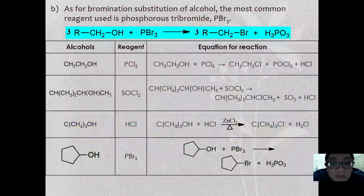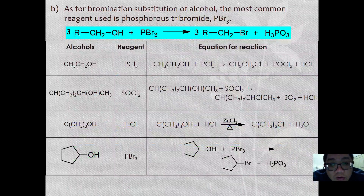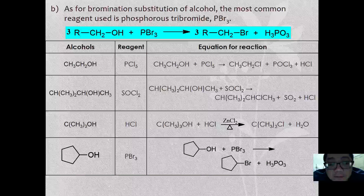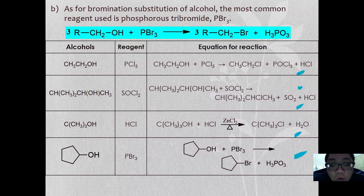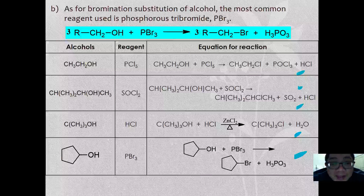For bromination substitution of alcohol, the most common reagent used is phosphorus tribromide (PBr3). Below are three different reactions of the halogenations of alcohol, specially prepared to aid understanding.